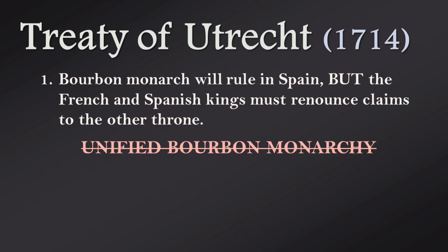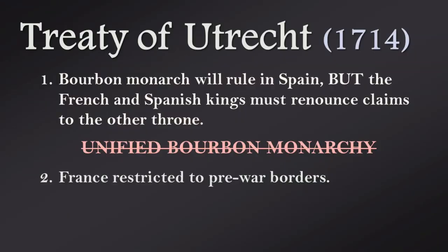First, a Bourbon monarch will rule in Spain, but the French and Spanish kings must renounce claims to the other throne — this is to prevent a unified Bourbon monarchy. As a little trivia, the Bourbon monarchy is still reigning in Spain today as a constitutional monarchy, though no longer in France. Second, France is restricted to the pre-war border. Louis did not lose any territory, but he did not gain any either.